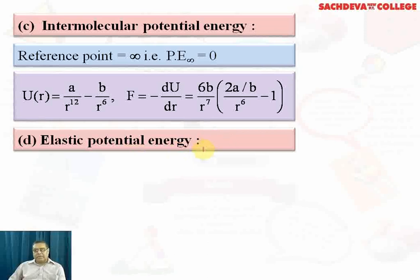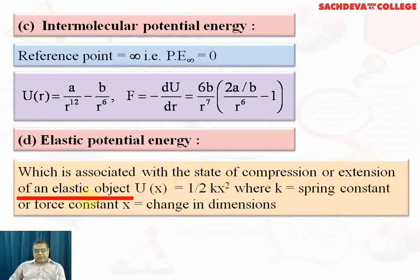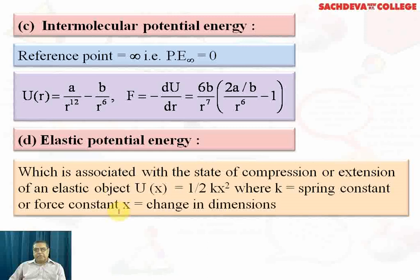Elasticity is the property of a material by which it regains its original position when the applied force is removed. Elastic potential energy is associated with the state of compression or extension of an elastic object such as a spring. It is given by U(x) = half kx², where k is the spring constant (force per unit displacement, in N/m) and x is the change in dimension.